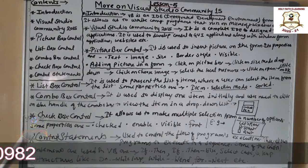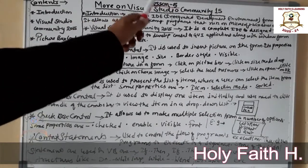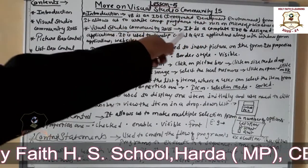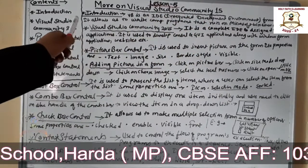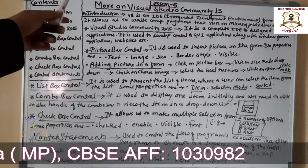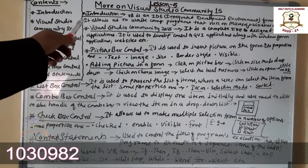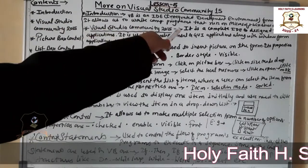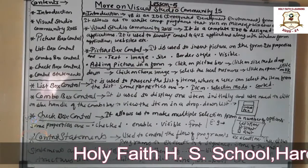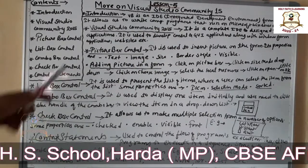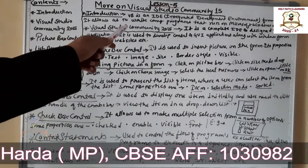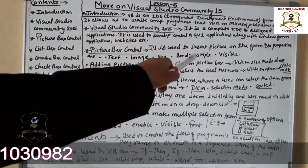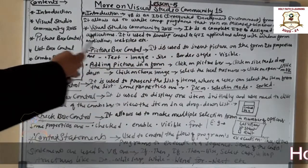Introduction: Visual Basic, or VB, is an IDE — Integrated Development Environment — from Microsoft. It allows us to write computer programs that run on the Microsoft Windows environment. Visual Studio Community 2015 is a complete IDE designed to build applications.